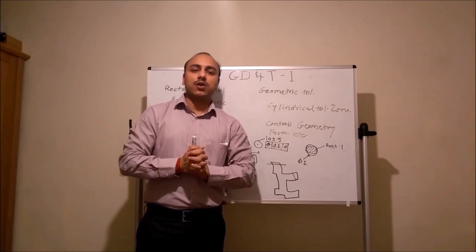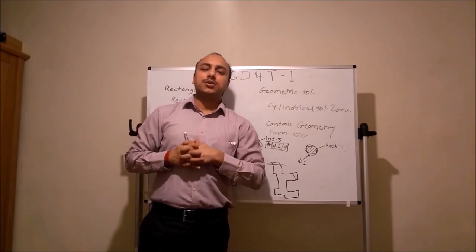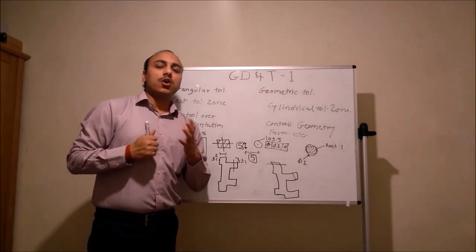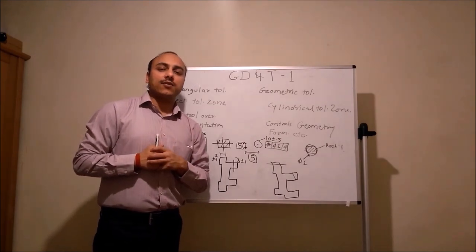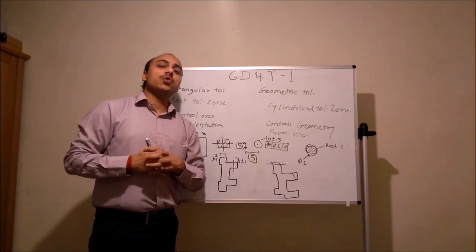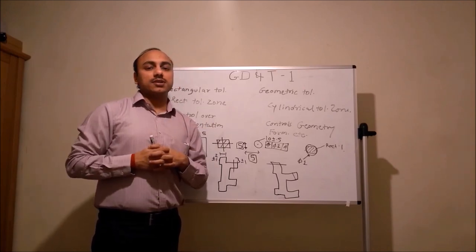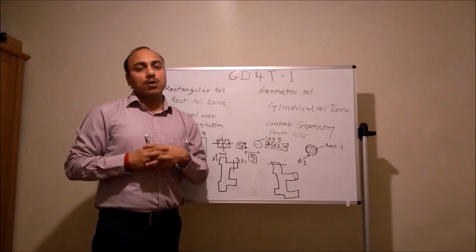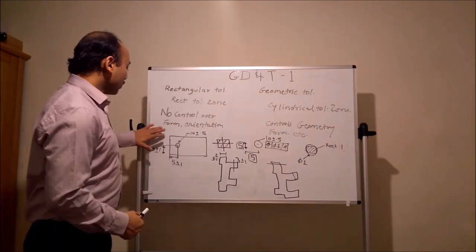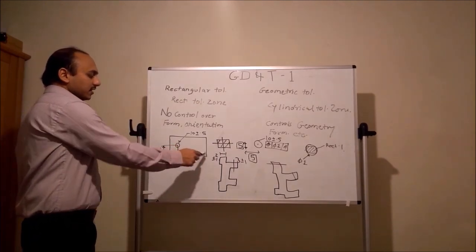What is the difference between rectangular tolerances and geometric tolerances? In case of rectangular tolerances, the tolerance zone itself is rectangular, whereas in case of geometric tolerances the tolerance zone is cylindrical, which adds more tolerances so manufacturers will have more tolerance. Let us discuss how.